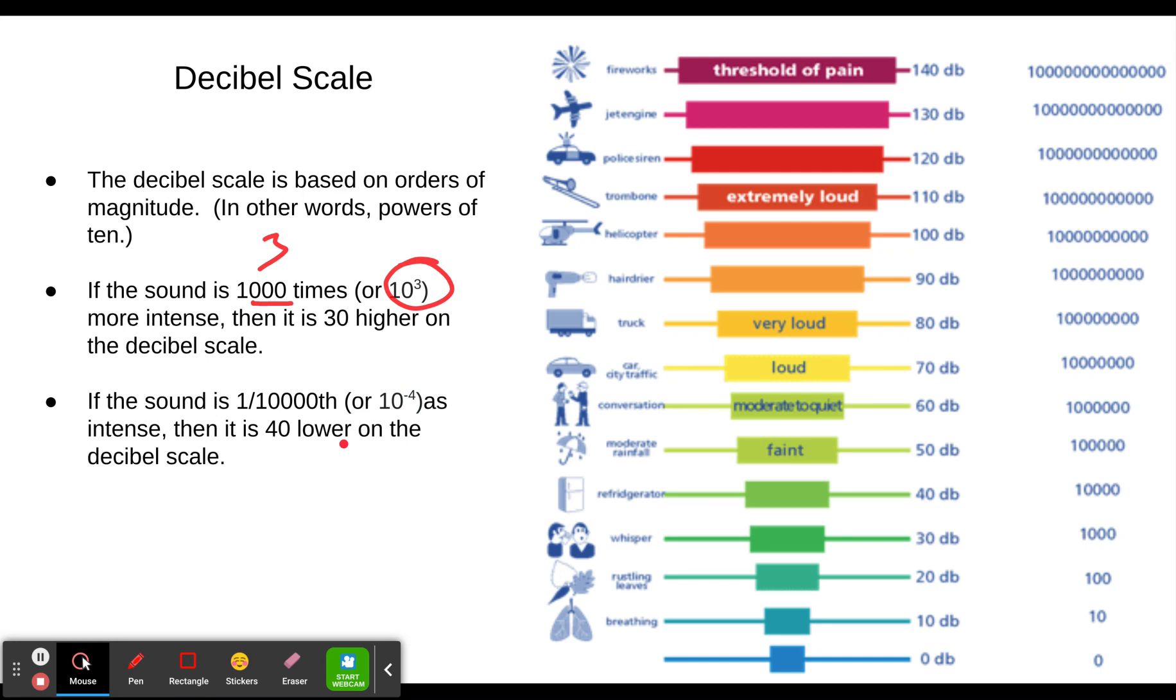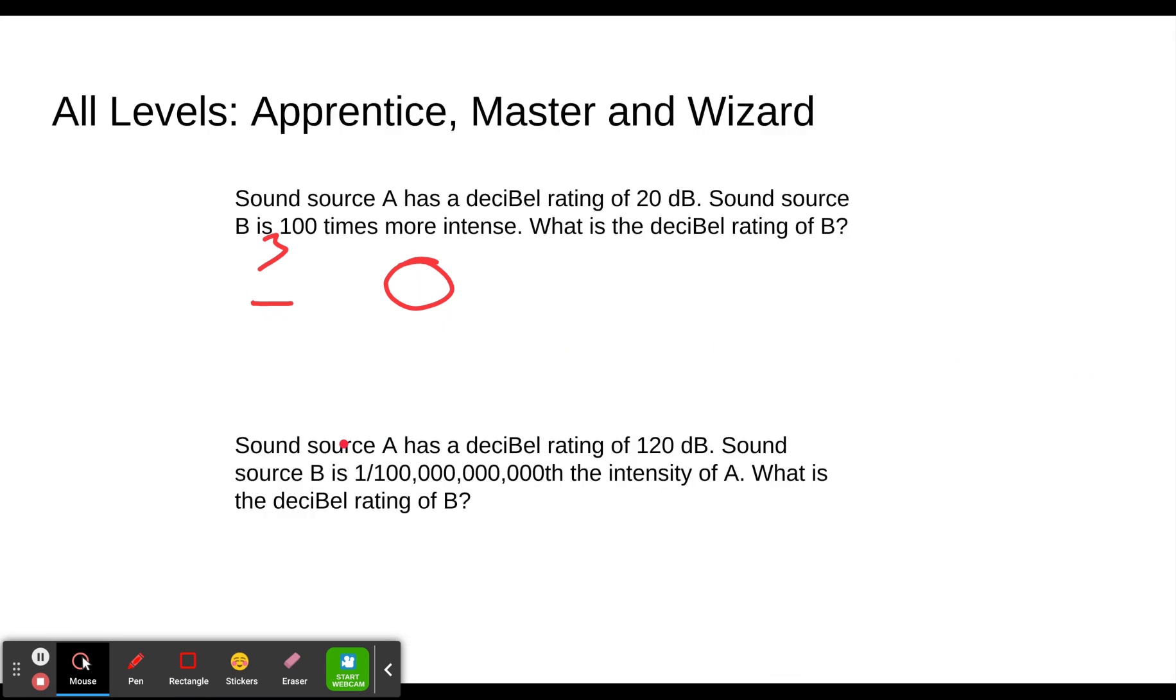Let's go through a couple sample problems here. So if we clear the screen, we read our problem here. Sound source A has a decibel rating of 20 dB. Sound source B is a hundred times more intense. Then we got to find B there.